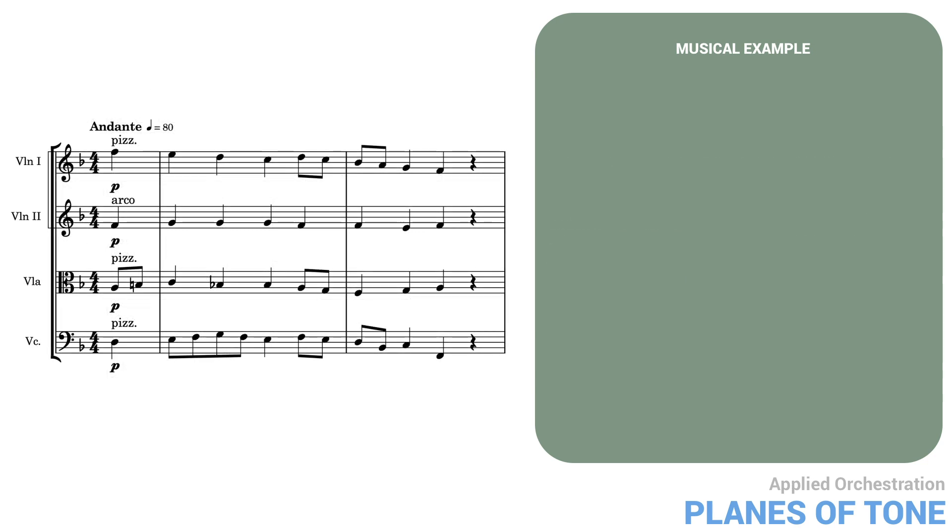Here's an example of what not to do. By having the second violin playing arco while the other strings are pizzicato, the second violin becomes the main line. But melodically, it's totally uninteresting. The result sounds ridiculous, creating a strong contrast where there shouldn't be any and bringing out an insignificant line.